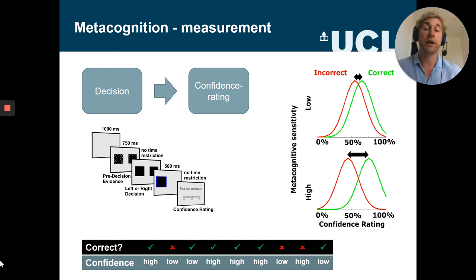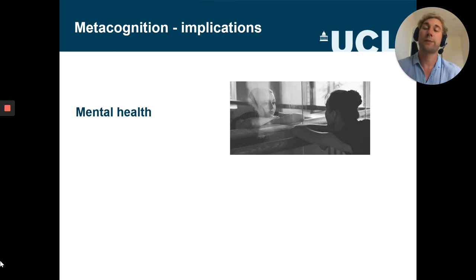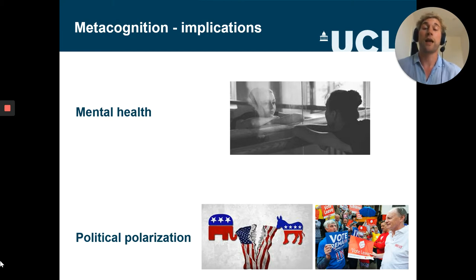Although we measure metacognition in quite simple tasks in the lab, this process of self-awareness might have relevance for quite a few real world issues. For instance, with respect to mental health, one of the symptoms of depression is that people tend to have negative evaluation of their own behaviors, implying a role of metacognition. But also in something completely different, like political polarization, we might assume a role of metacognition, and that's something I'm personally more interested in.